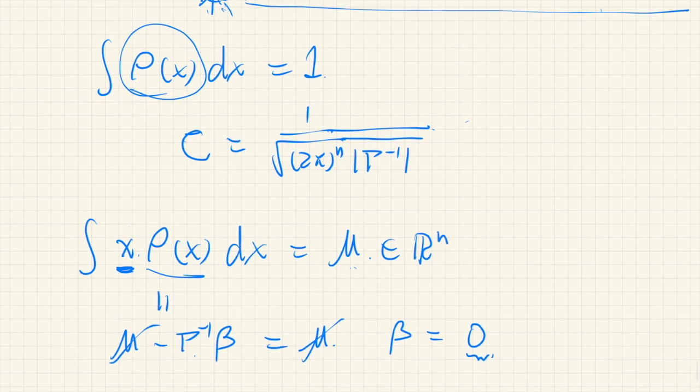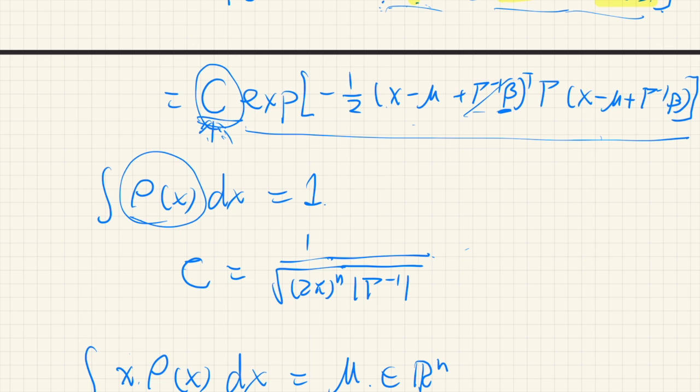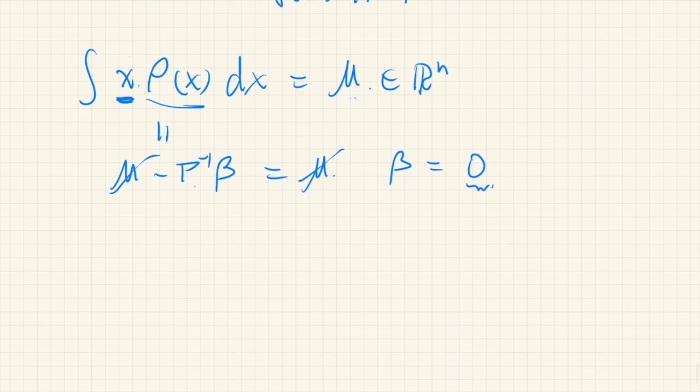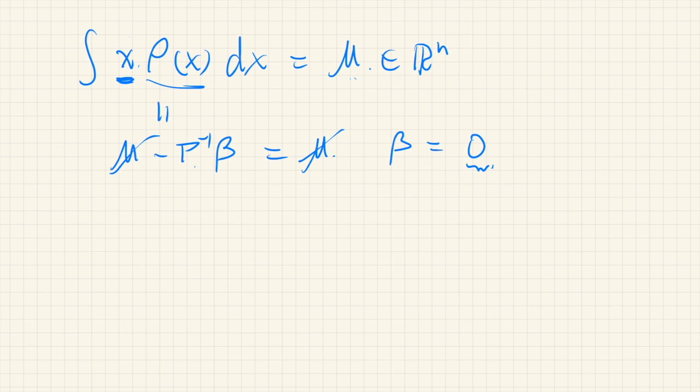So β is zero. So now this term is gone. So it's almost like the normal distribution already.